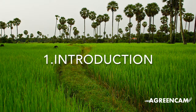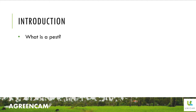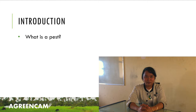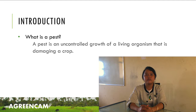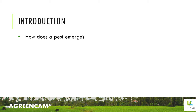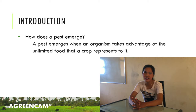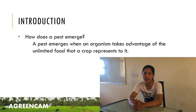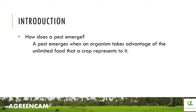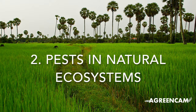To understand what biological control is, first we need to understand some basic concepts. What is a pest? A pest is an uncontrolled proliferation of a living organism that is damaging a crop. How does a pest emerge? A pest emerges when an organism takes advantage of the unlimited resource that a crop represents to it. We have said that pests are organisms that damage crops. Let's now think about the role of pests in natural ecosystems.